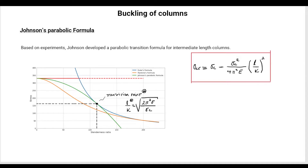Let's take a look at this new formulation. We've seen already Euler's formula, we've seen Rankine's formula, and we've also seen a little bit about what happens when we have an eccentrically applied load on the column. This is the case we're going to present here for Johnson's Parabolic Formula. The principle of this formulation lays, in a way, similarly to Rankine's.